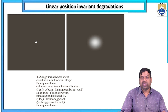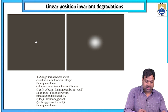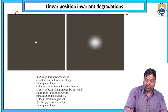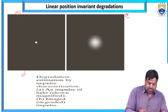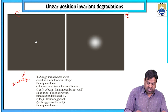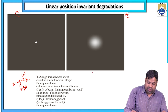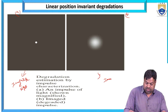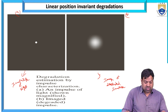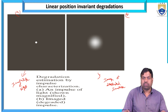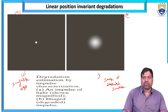Here is one example of degradation estimation by impulse characterization. Figure A is an impulse of light and Figure B is an image of a degraded impulse. These are two different figures: the impulse light function and the degraded impulse function.